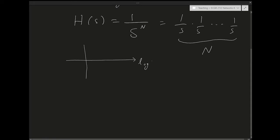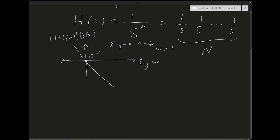If we plot log omega versus the magnitude of H(jω) in dB — and whenever we say dB, we imply we're plotting 20 log |H(jω)| — this would be a straight line passing through the origin. The origin corresponds to log omega equals 0, meaning omega equals 1. This line will have a slope of minus n times 20 dB per decade.